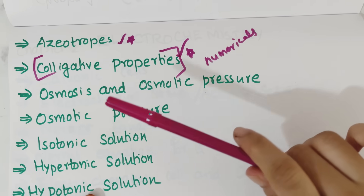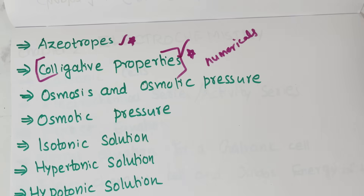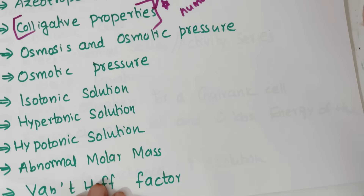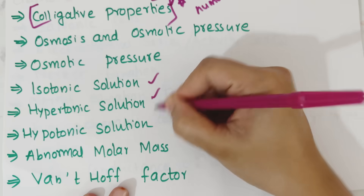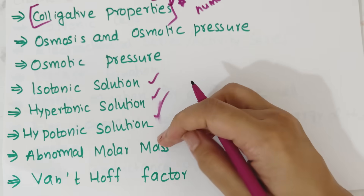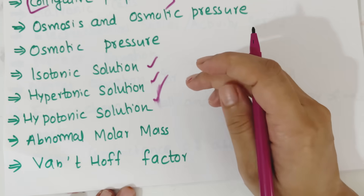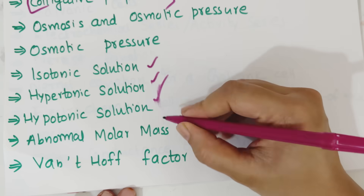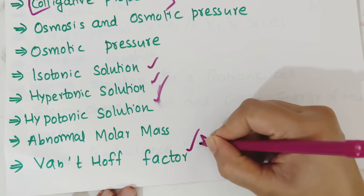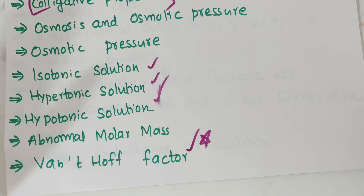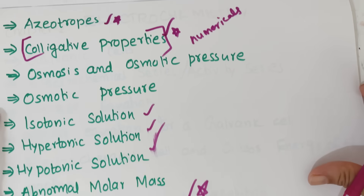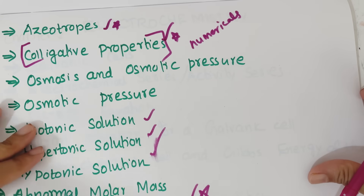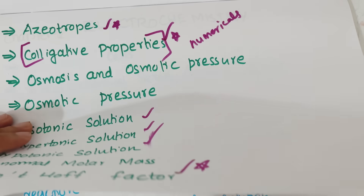Then osmotic pressure, isotonic solution, hypertonic solution, hypotonic solution — these are important to learn. What is abnormal molar mass? What is the Van't Hoff factor? These are the star topics and are very important.